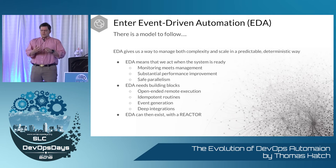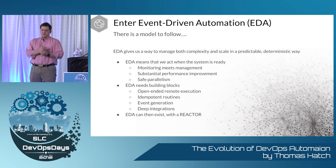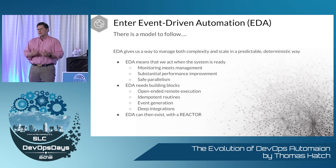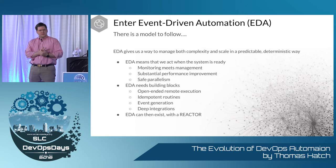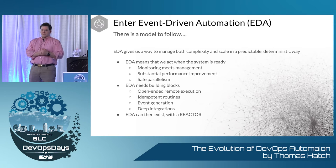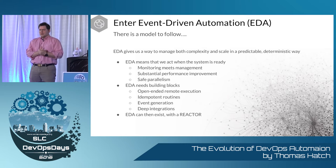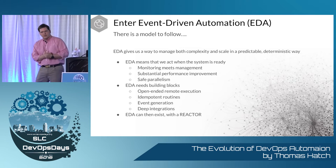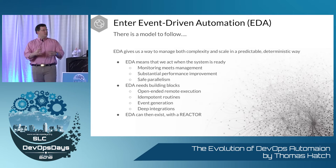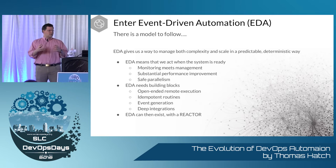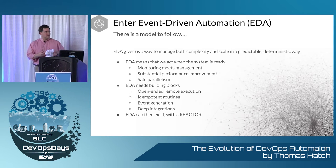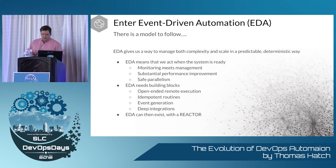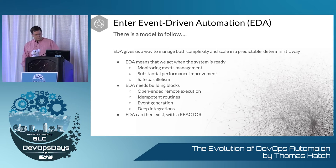We need integrations with monitoring tools, cloud event systems, and tools like New Relic that give us aggregate data — so we can feed all of that back into the last and most important component of event-driven automation: the reactor system.